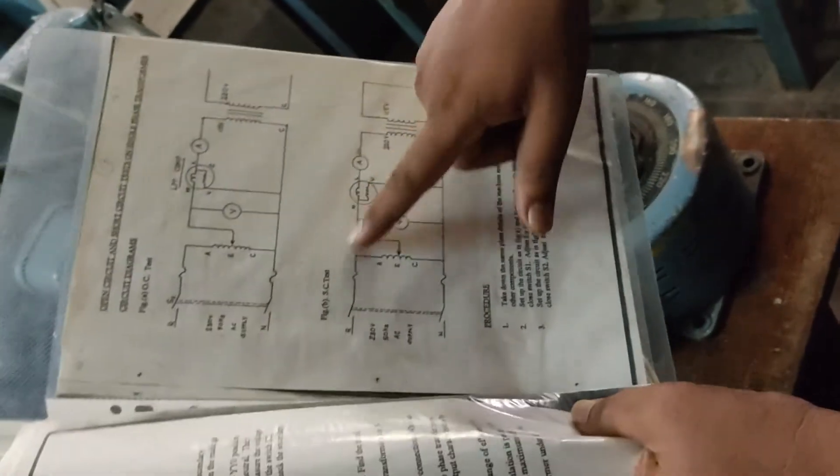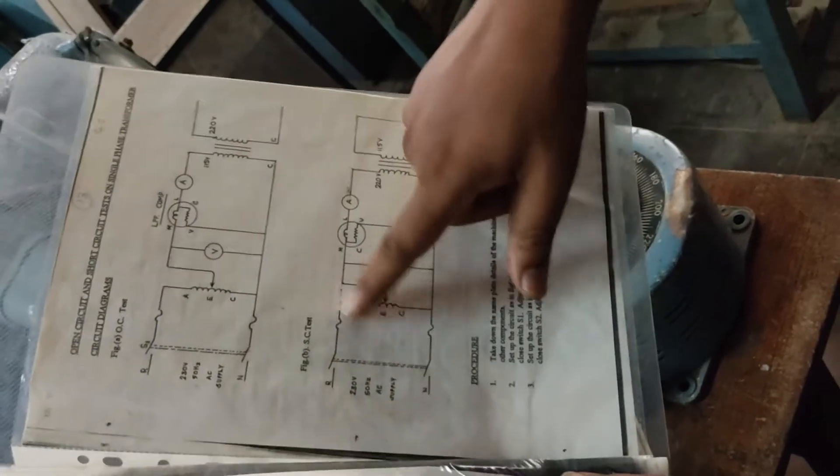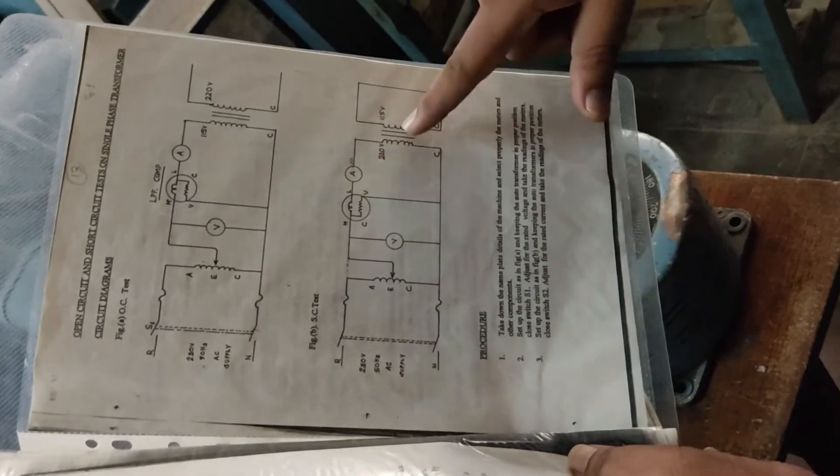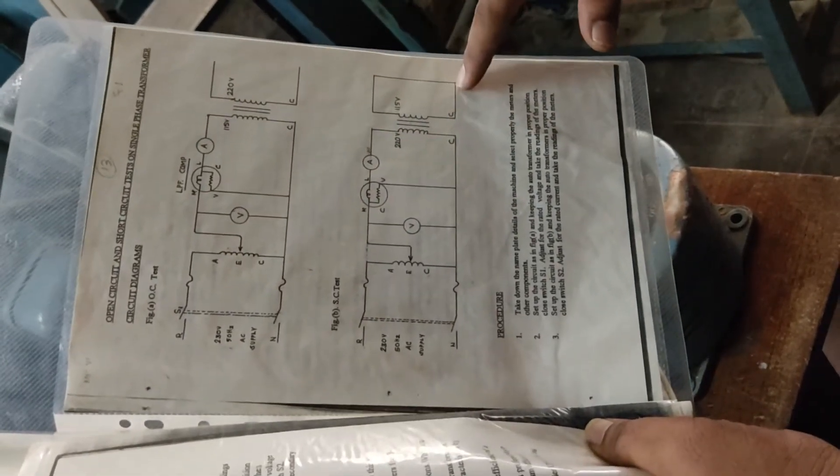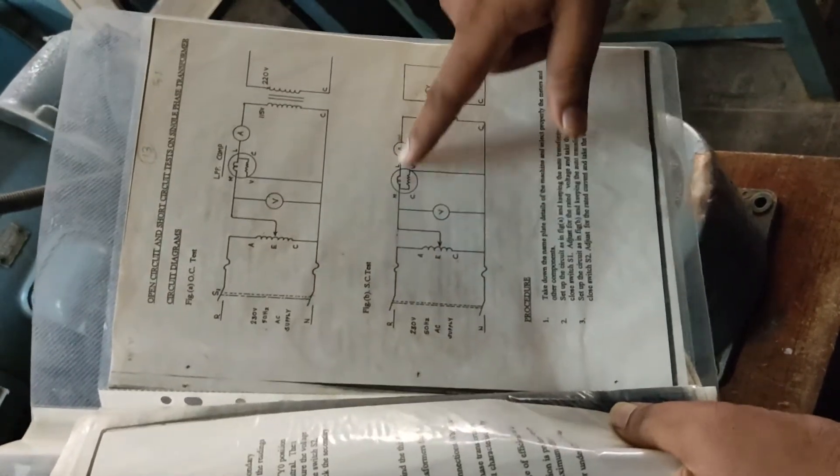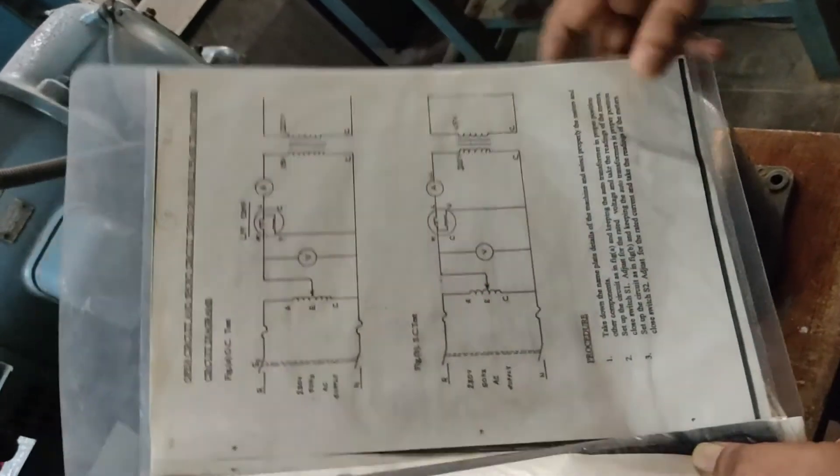This is a short circuit test on a single phase transformer. Supply can be given through a variac to the transformer. The supply is given to the high voltage side and the low voltage side is shorted. Required instruments include a voltmeter for input voltage, an ammeter in series with the phase, and a wattmeter to measure the power input. The output side is short circuited.